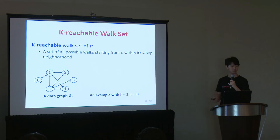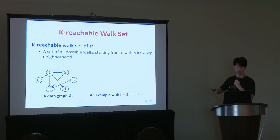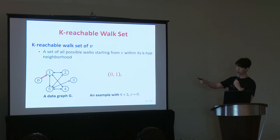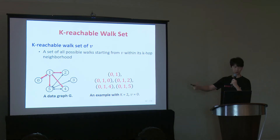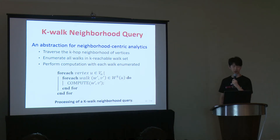We define the k-reachable walk set. The k-reachable walk set of a vertex v is a set of all possible walks starting from v within its k-hop neighborhood. We use walk, which is more general than path in that the same vertex can appear multiple times. As an example where k=2 and v=0: for length-1 walks, walk (0,1) is included because v1 is one-hop reachable from v0. For length-2 walks, all walks to vertices two-hop reachable from v0 are included.